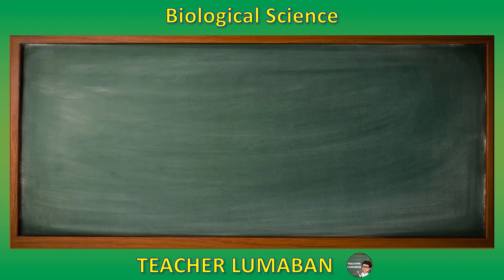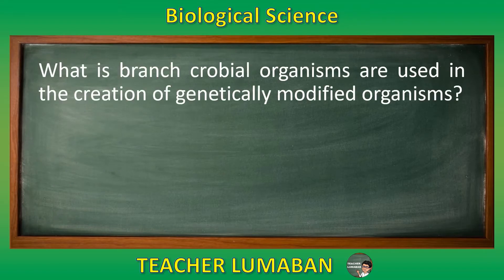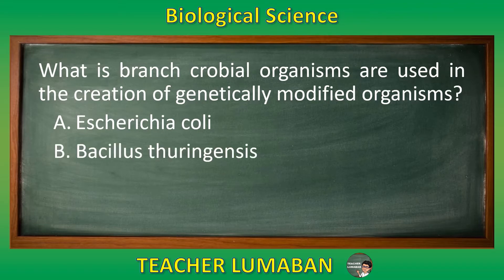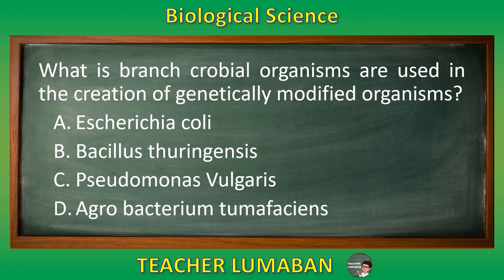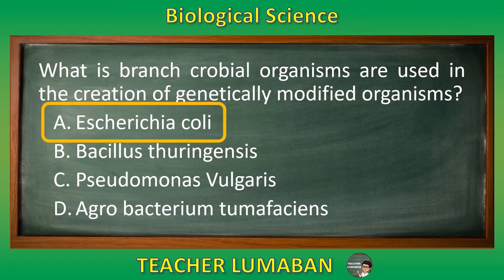What branch of microbial organisms is used in the creation of genetically modified organisms? Letter A: Escherichia coli. Letter B: Bacillus thuringiensis. Letter C: Pseudomonas vulgaris. Letter D: Agrobacterium tumefaciens. Choose the suitable answer based on the given choices in 5 seconds. 5, 4, 3, 2, 1. The correct answer is Letter A, Escherichia coli. The microbial organism used in the creation of genetically modified organisms is Escherichia coli.